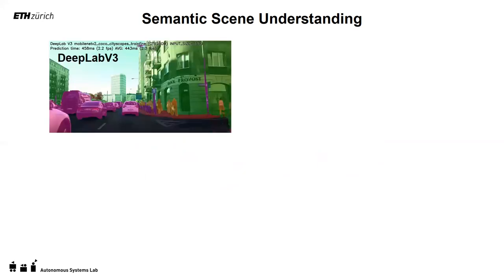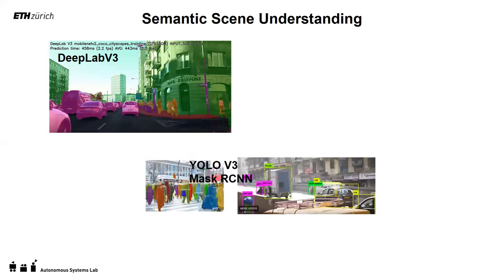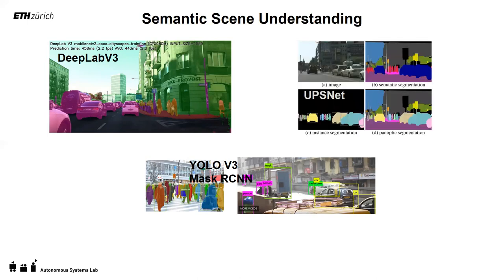Let's start with the semantics in understanding part of the talk. At this point, nobody can doubt that deep learning has brought so many advances for the understanding of images. The state-of-the-art semantic methods are amazingly accurate — something we didn't think possible 10 years ago. It's not only semantic segmentation; we also have instance segmentation and object detection in very difficult situations. We can even have instance and semantics all-in-one to get panoptic segmentation of the scene.